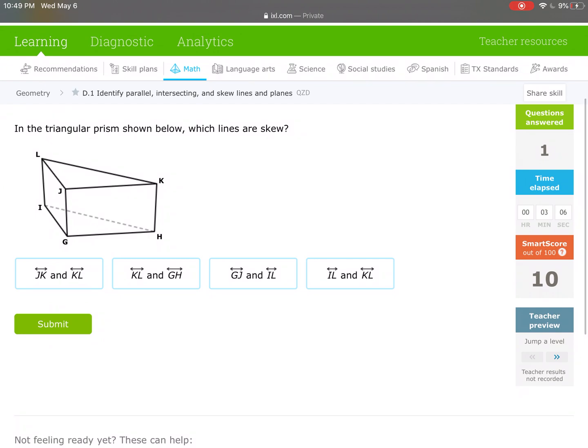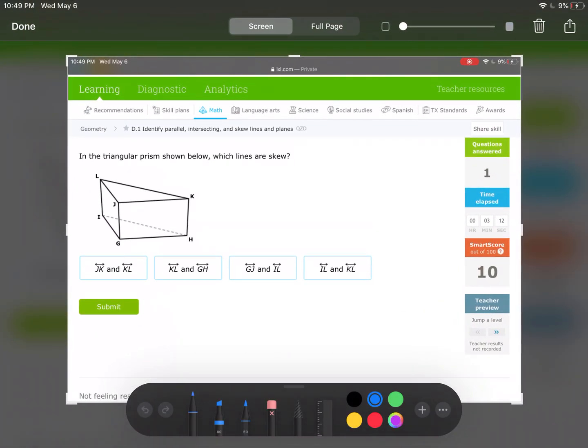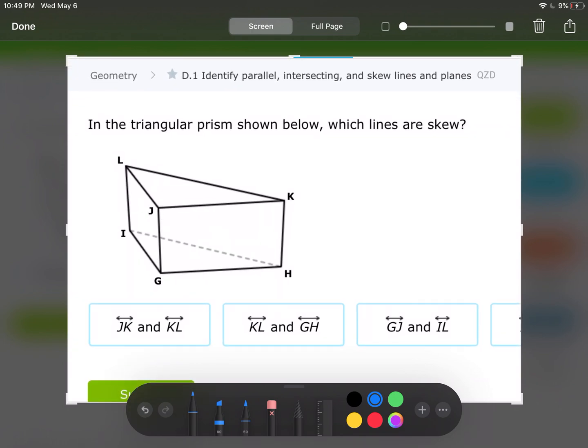In this triangular prism, which ones are skew? I am quickly going to go through this one. Let's see, JK and KL. You see that those lines are actually intersecting and they're in the same plane. So first one's out.